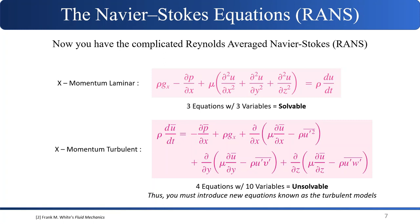This gives you a much more complicated RANS equation because you've decomposed into two components. For the x-momentum of laminar flow, you initially had gravity, pressure gradient, viscosity, and acceleration — three variables in three directions of velocity. Once you introduce the Reynolds decomposition, you now have averages, fluctuations, and averages of fluctuations — more variables than equations. This is something that's unsolvable on its own, so you must introduce new equations known as turbulence models.